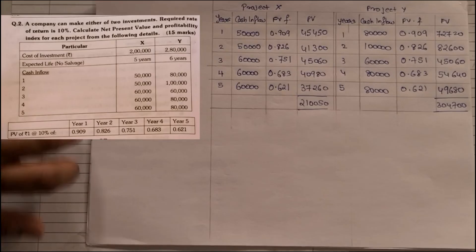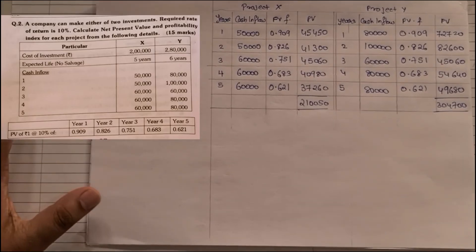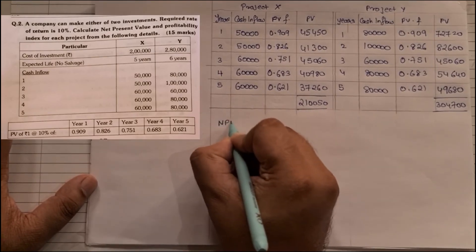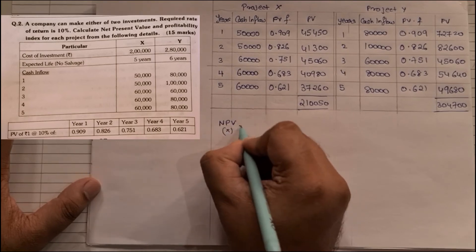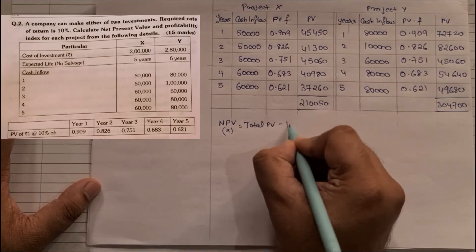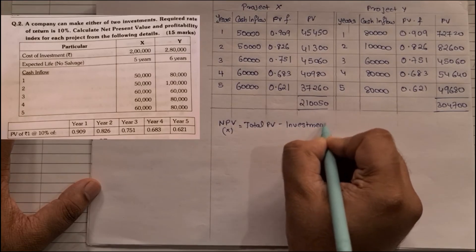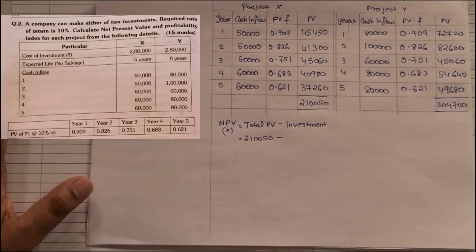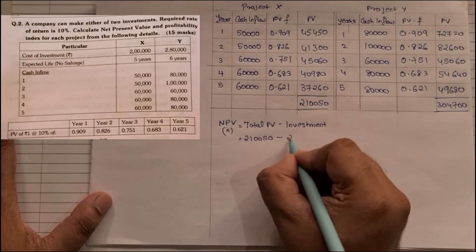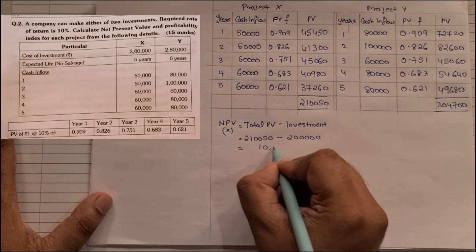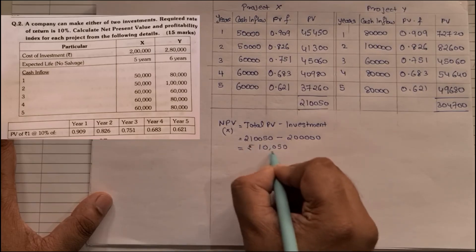Now this is the table that we needed to solve. Now they are asking us to find the value of NPV and profitability index individually. NPV, this is for X. The formula is total PV minus the investment. Total PV was 2,10,050. Investment in the question they have given is 2 lakhs. So when you minus it, you will get the answer as 10,050. This is my NPV of X.